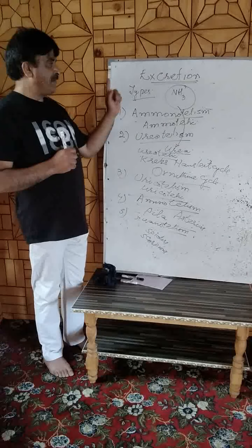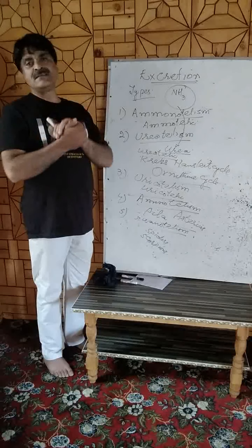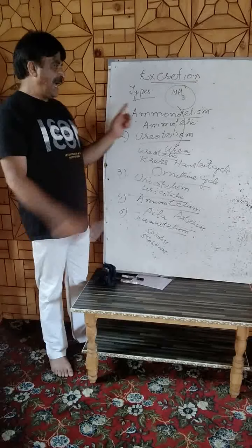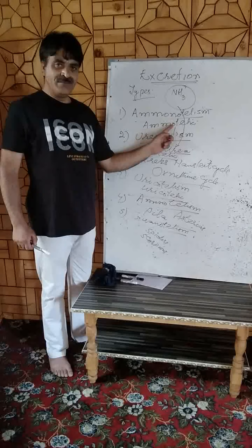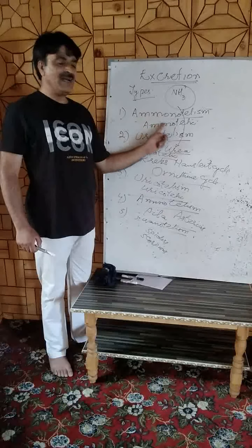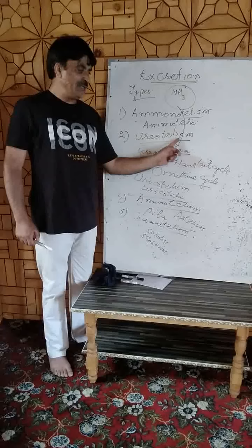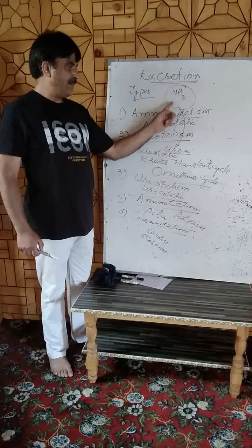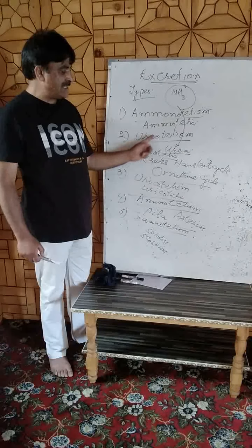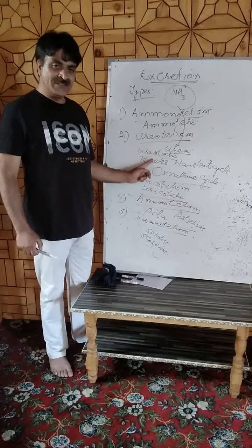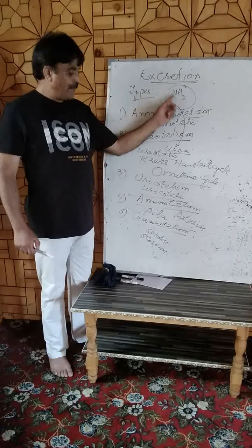Quick revision: depending upon the basic nitrogenous substance excreted from the body, animals can show ammonotelism — removal of ammonia in dissolved form in water — and these animals are called ammonotelic. The second mode is ureotelism, where ammonia is first converted into urea through the Krebs-Henseleit cycle or ornithine cycle, and such animals are called ureotelic.